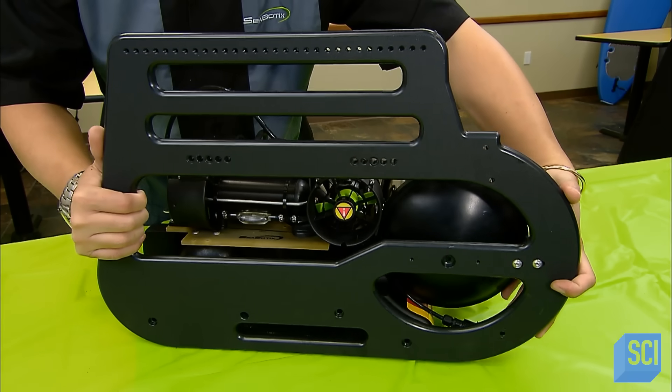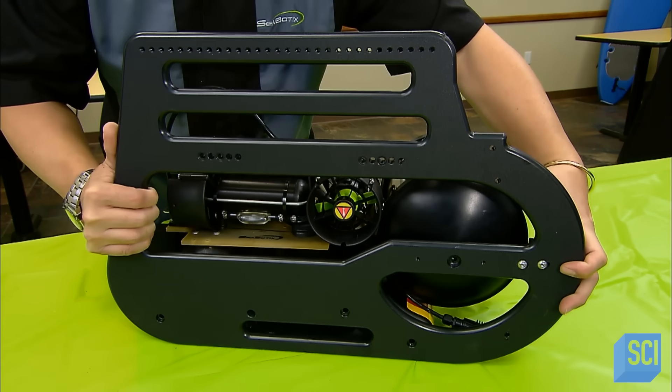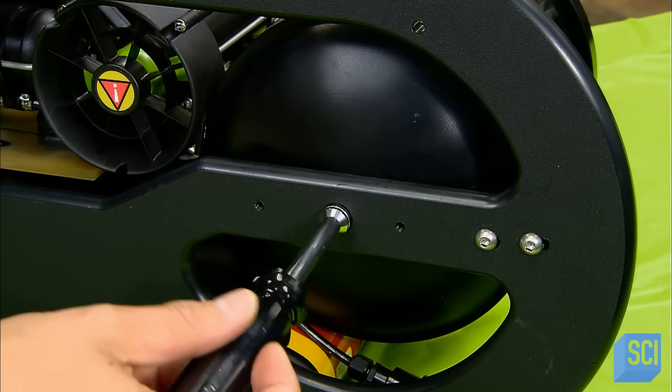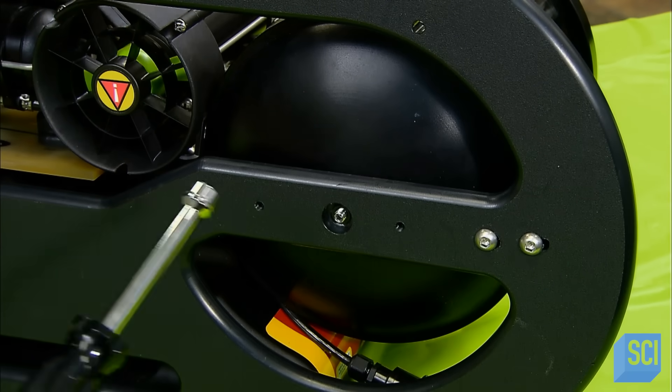These bumper frames act like bumpers on a car. They absorb the force of impact, protecting the robot from damage when it encounters underwater objects.